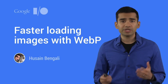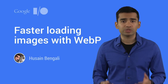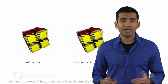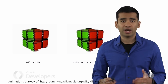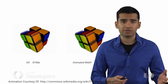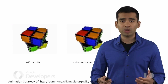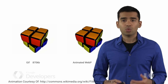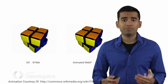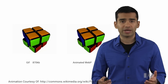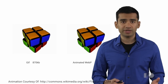Over the past year, the biggest feature we added was support for animated images. Now you can create high-quality animations with rich colors and transparencies, all while getting much better compression than GIF. With this addition, WebP now supports the use cases of all major traditional formats: JPEG, PNG, and GIF.